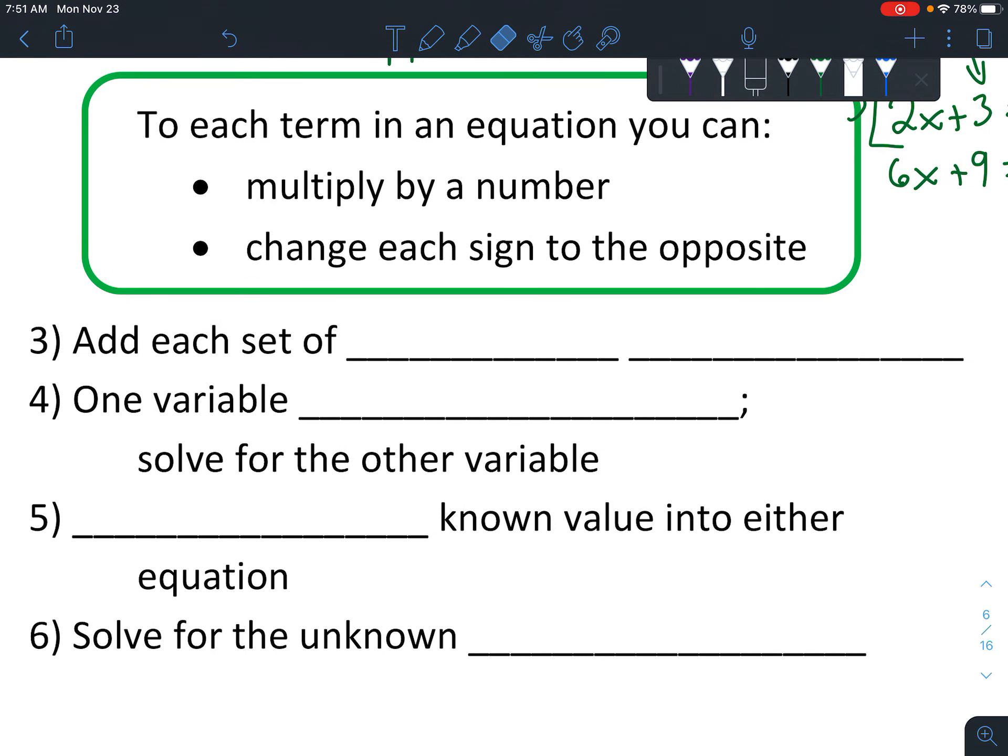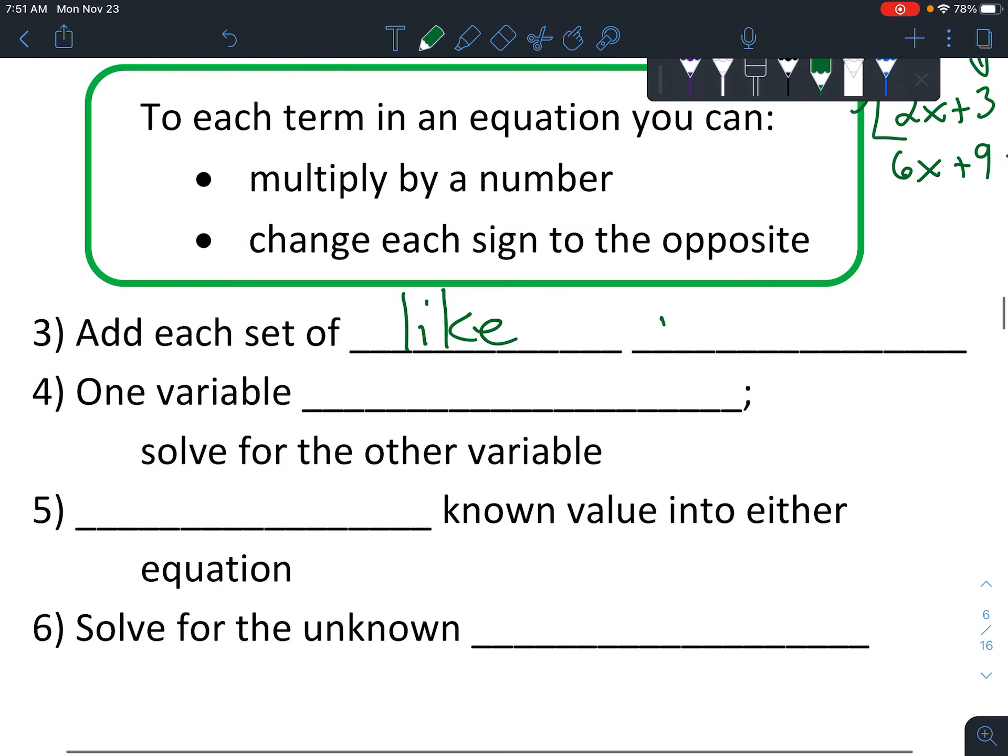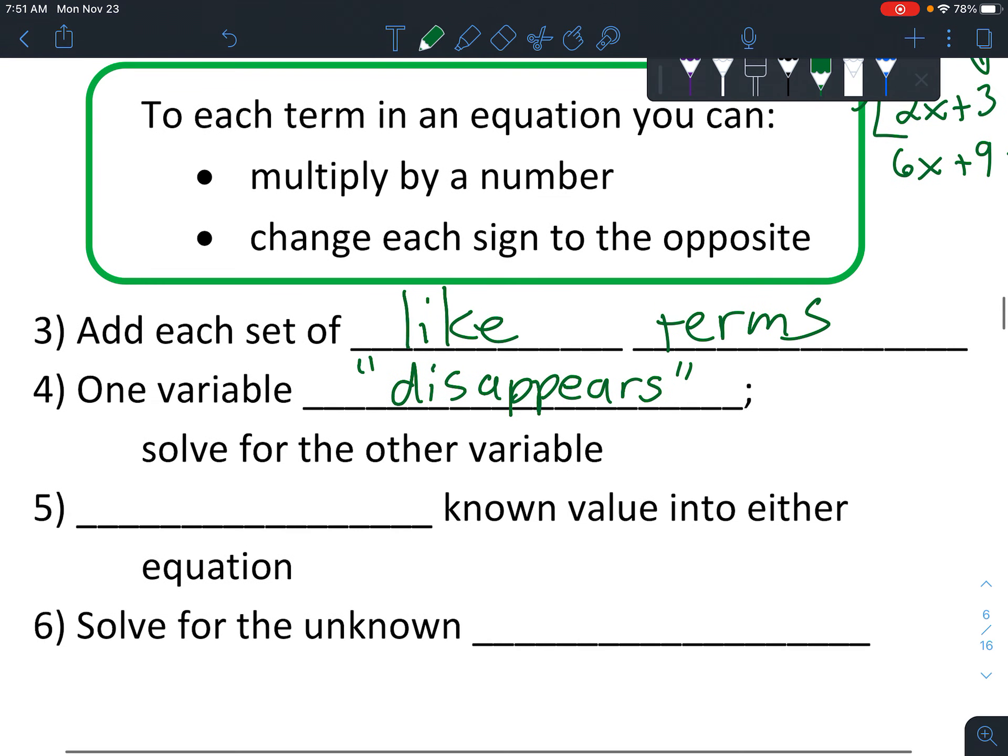After you get the same number and the opposite symbol, you're going to add each set of like terms. So the like terms are the ones that have the same variable or they don't have any number at all. And then one variable disappears. That's the best part because that was your whole goal is to get it so your equation only has one variable. And then you're going to solve for the other variable.